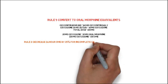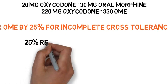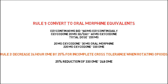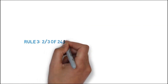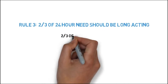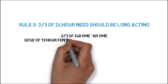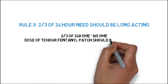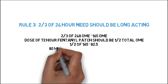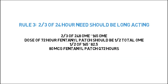For rule two, we decrease the 24-hour OME by 25% to account for incomplete cross-tolerance. A 25% reduction of 330 OME leaves us with 248 OME. For rule three, the long-acting dose equals two-thirds of the 24-hour OME. Two-thirds of 248 OME equals 165 OME. For the transdermal fentanyl patch, the dose in micrograms per hour equals one-half of the total OME. One-half of 165 equals 82.5, so we use an 80 microgram per hour fentanyl patch.